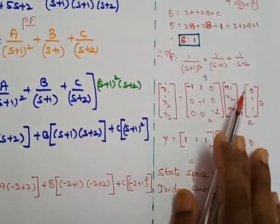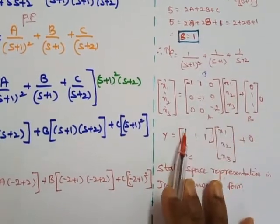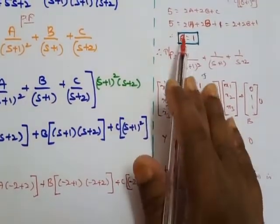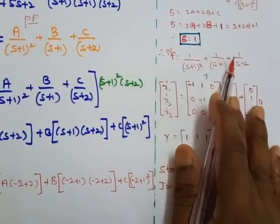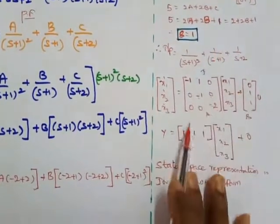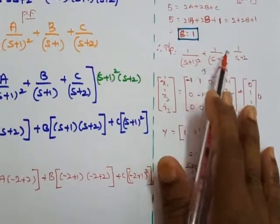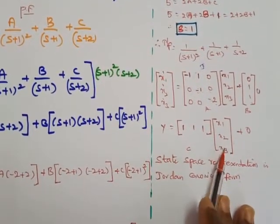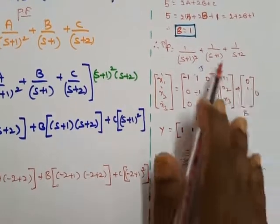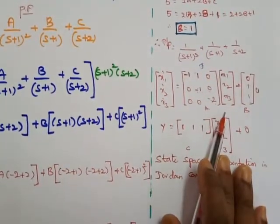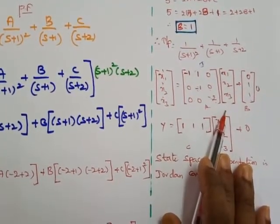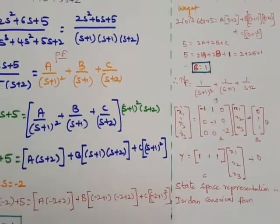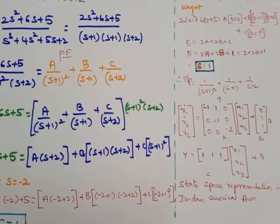If two poles are repeated, the B matrix would be [0, 0, 1]. For the C matrix, y = [1, 1, 1] — the numerator elements representing zeros form the C matrix as [1, 1, 1] multiplied by [x1, x2, x3]. The D matrix is 0. This is how to represent the Jordan canonical form state space representation of a given transfer function. If you like the video, please like, share, and comment. Thank you.